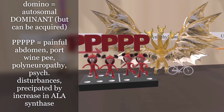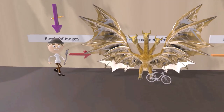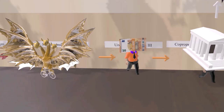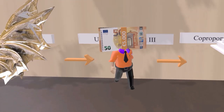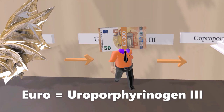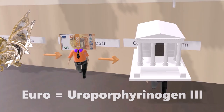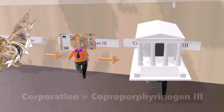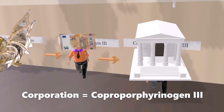That's the end of the intermission show. We're up to hydroxymethyl bilane, which turns into the 'euro guy' — representing uroporphyrinogen III — as the next step of heme synthesis is when hydroxymethyl bilane is converted to uroporphyrinogen III. Uroporphyrinogen III is then converted to the 'corporation building' — representing coproporphyrinogen III.